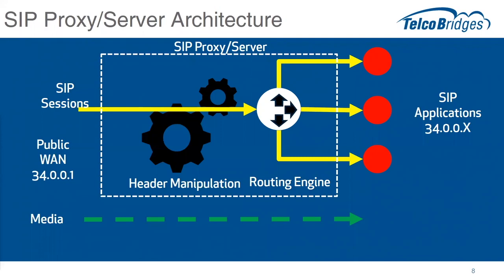The SIP proxy and server only works on the SIP messages. SIP really consists of two pieces: the SIP call control, and the media, which is done out of band in a separate stream — usually an RTP stream over UDP. SIP proxies and SIP servers almost universally have two core elements: header manipulation and a routing engine. They use header manipulation to fix or modify messages, then the routing engine forwards them to applications. Critically, the media never goes through the proxy or server — it goes directly to the endpoints.